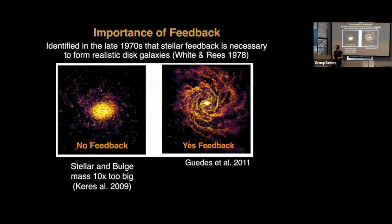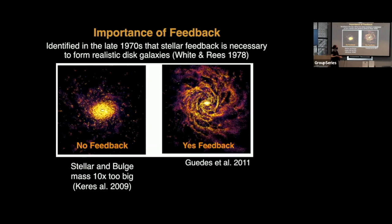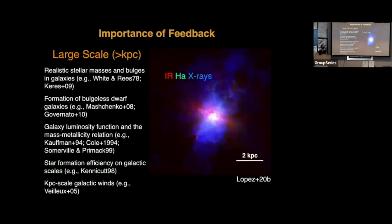In general, stellar feedback is important on many different scales — it's sort of one of these very interdisciplinary topics that incorporates basically all of astrophysics. It was identified in the late 1970s that you need stellar feedback in order to produce realistic galaxies. If you don't incorporate stellar feedback in your simulation of something that should look like the Milky Way, you get a galaxy like the picture on the left — a stellar mass and bulge mass that's about 10 times too big, with too many stars in the center. However, if you do incorporate stellar feedback, it removes gas from the center, produces the extended disk structure, and we get something that looks much more like the Milky Way.